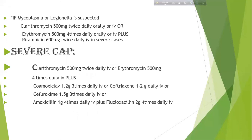If Mycoplasma or Legionella is suspected: clarithromycin 500 mg twice daily orally or IV, or erythromycin 500 mg four times daily orally or IV, plus rifampicin 600 mg twice daily IV in severe cases. For severe community-acquired pneumonia: clarithromycin 500 mg twice daily IV or erythromycin 500 mg four times daily IV, plus co-amoxiclav 1–2 g three times daily IV, or ceftriaxone 1–2 g daily IV, or cefuroxime 1.5 g three times daily IV, or amoxicillin 1 g four times daily IV plus flucloxacillin 2 g four times daily IV.